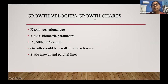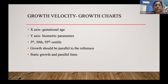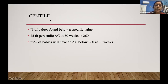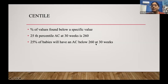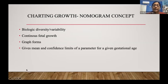Growth charts have an x-axis for gestational age and a y-axis for biometric parameters, with 5th, 50th, and 95th centile lines. You plot parameters along the graph to see how the baby is growing over time. A centile represents the percentage of values found below a specific value. For example, an AC at the 25th centile at 30 weeks means 25% of babies have an AC below that value at 30 weeks.